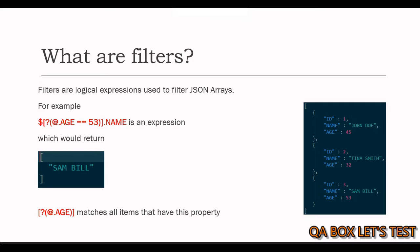So, what are filters? Filters are logical expressions used to filter JSON arrays. In some scenarios, it is required to filter the JSON data to only those objects which match a specific criteria. An example of a JSON path expression with a filter is this. You have the root element at the start, followed by opening and closing square brackets since we are working with JSON arrays, and inside that you start with a question mark followed by round parentheses, and inside that you write the expression.